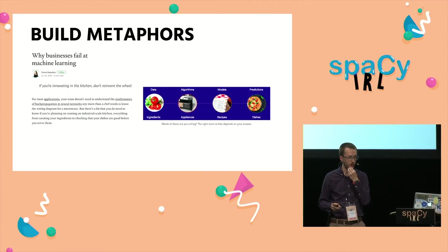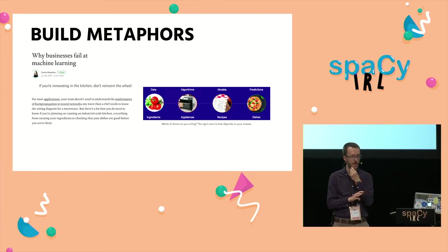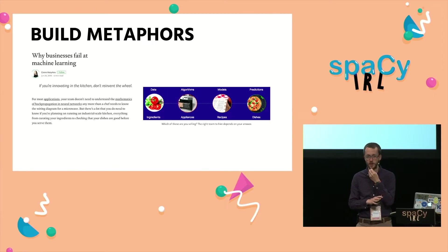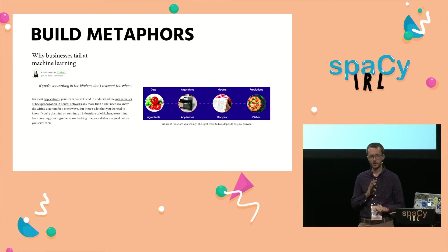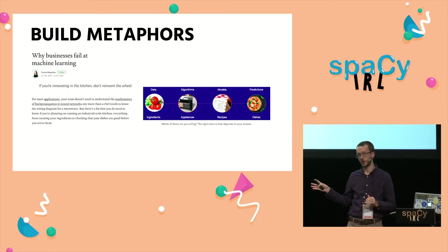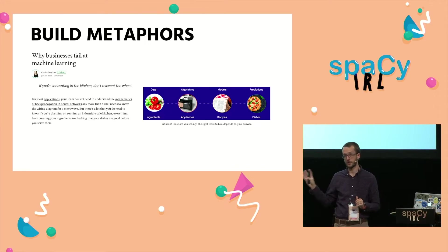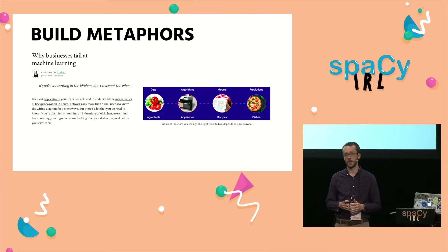One of the best metaphors I have seen is in an article by Cassie Kozyrkov. She's the chief decision scientist at Google, and she wrote a fantastic article about why businesses fail at machine learning. She used the metaphor of a kitchen.